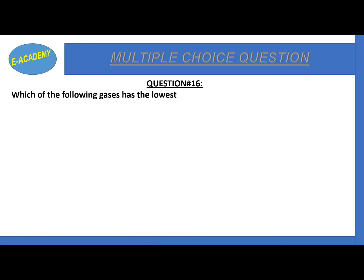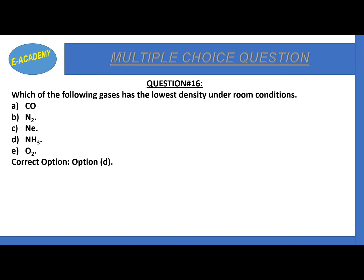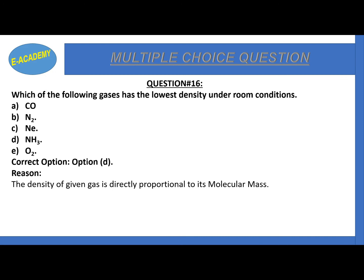Question number 16: which of the following gases has the lowest density under room conditions - CO2, N2, Neon, NH3, or O2? The correct option is NH3 - ammonia has the lowest density under room conditions. The density of a given gas is directly proportional to its molecular mass, and NH3 has the lowest molecular mass among these options.